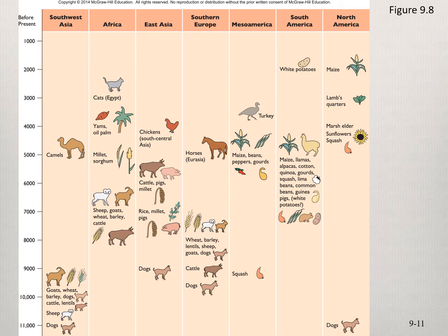Dogs were the easiest domesticate everywhere, obviously. In Southwest Asia, the earliest domesticates were sheep and cattle, and then we get grain food crops.